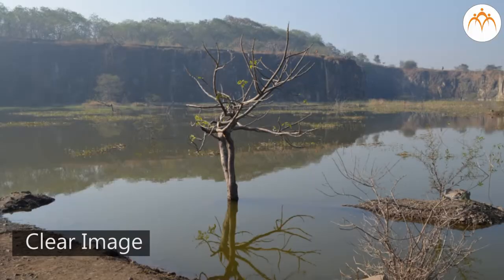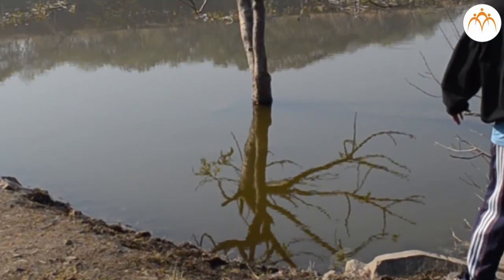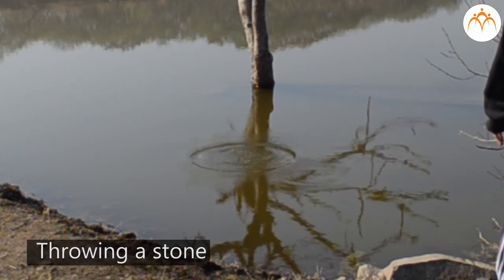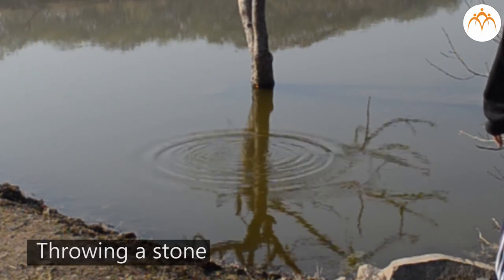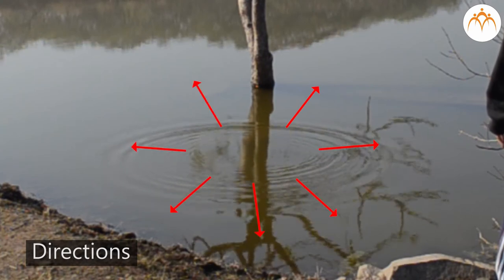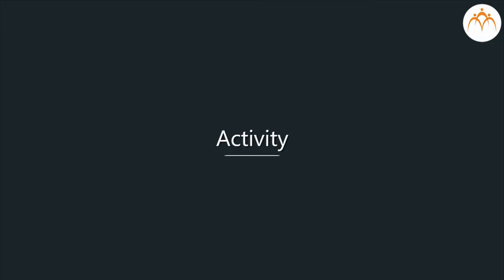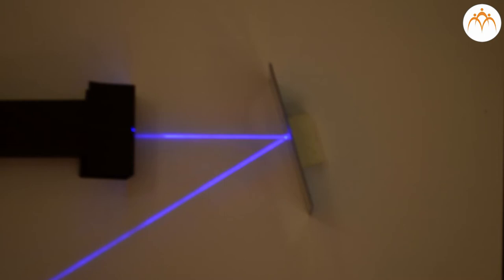As long as water surface is smooth light is reflected in an orderly way and there is a clear image. If water is disturbed by throwing a stone the image is not clear as light is reflected in all directions. Let's understand how light is reflected with this activity.